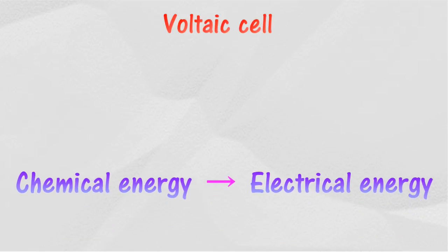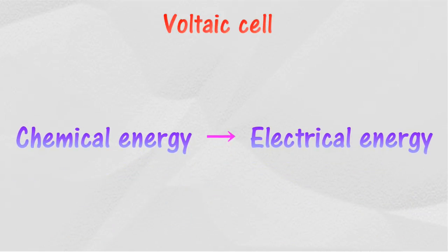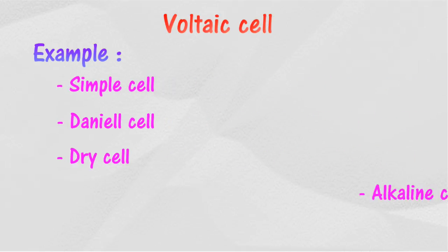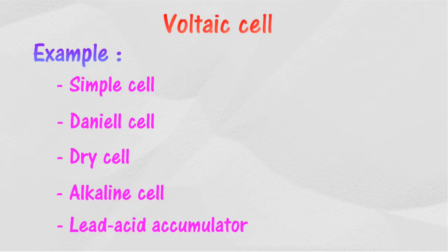A voltaic cell is a type of cell which produces electrical energy from chemical reactions occurring inside it. Examples of voltaic cells include simple cell, Daniel cell, dry cell, alkaline cell, and lead acid accumulator.